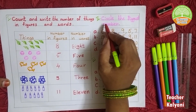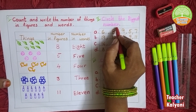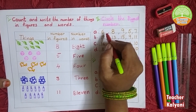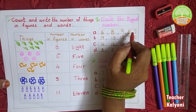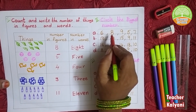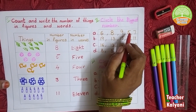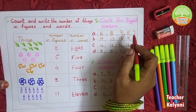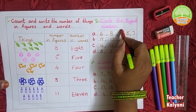Next one: circle the biggest number. Which is the biggest number in this box? 6, 8, 9, 5, 7. The biggest number is 9.